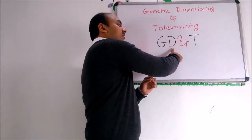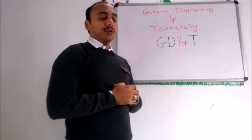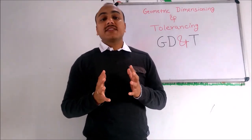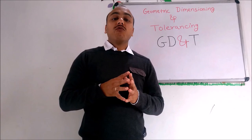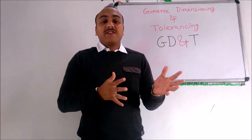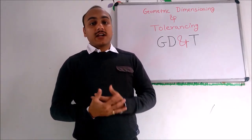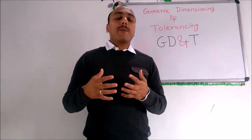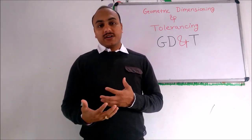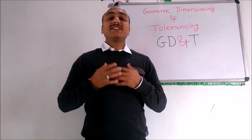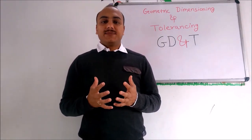GD&T can be divided into two parts: one is geometric dimensioning and the other is geometric tolerancing. Geometric tolerancing depends upon geometric dimensioning — the dimensioning scheme used in a drawing for a component is going to affect the tolerancing, including geometric tolerancing. So let's discuss a few dimensioning schemes.